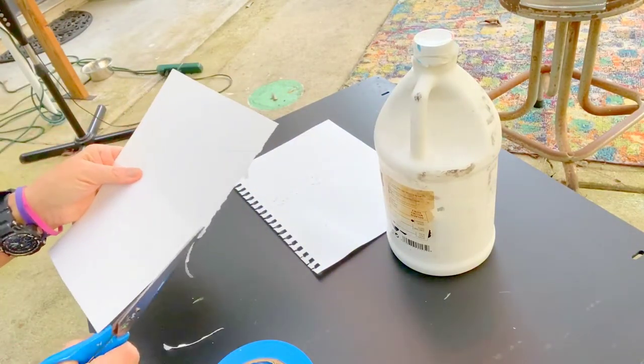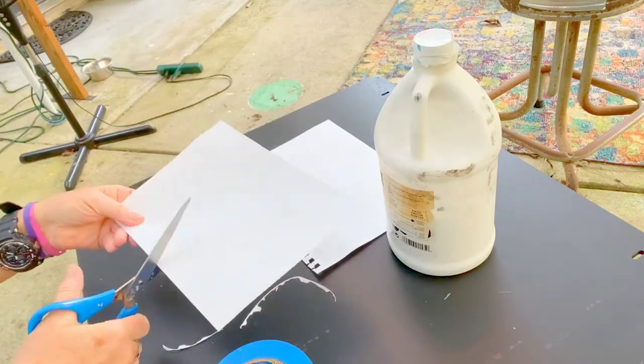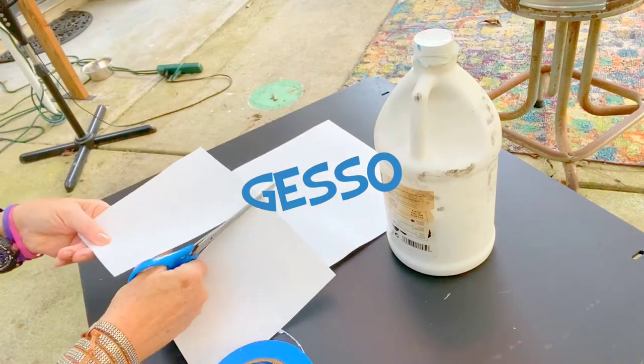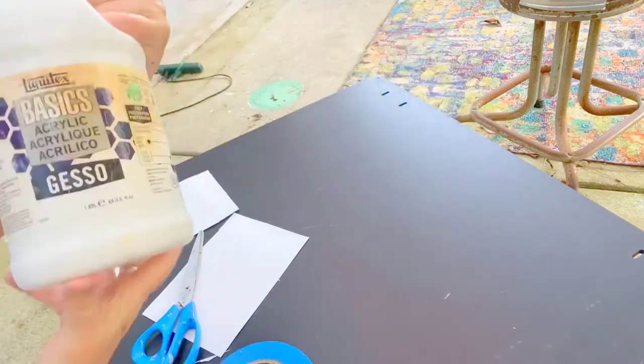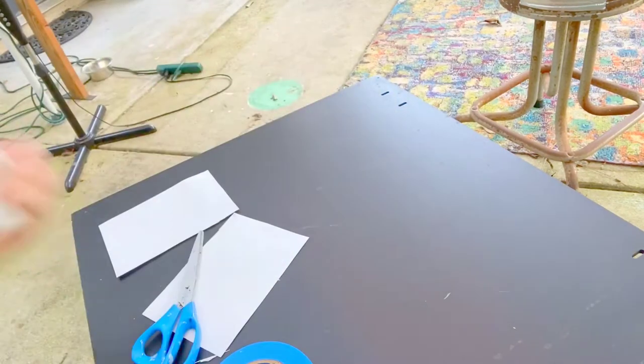We use a gesso, which is basically a primer. Gesso is a water-based paint, most of the time white, but can be other colors.